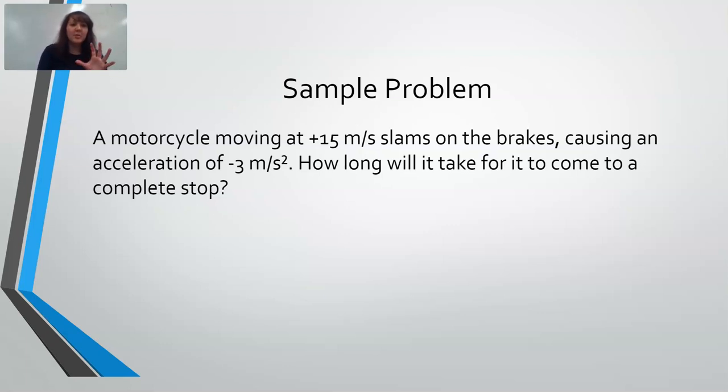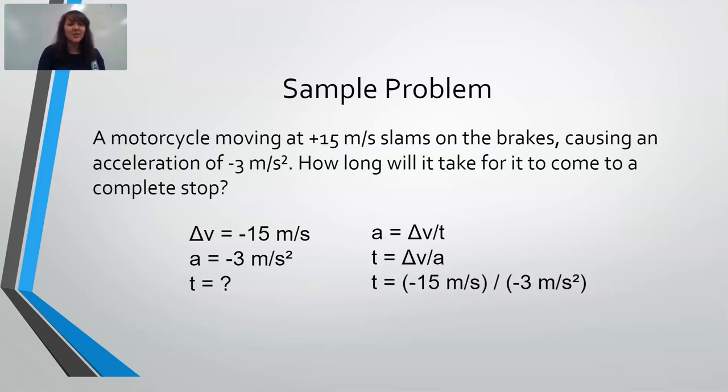So working through this, I'm going to make a list of everything that I know. The motorcycle's starting off at 15 meters per second. It's trying to have a velocity of zero, so that would be a change in velocity of negative 15 meters per second. And the acceleration is negative 3 meters per second per second. We can rearrange the equation to solve for time, which gives us that time is equal to change in velocity over acceleration. Negative 15 divided by negative 3 gives me 5 seconds that it will take before our motorcycle comes to a stop.